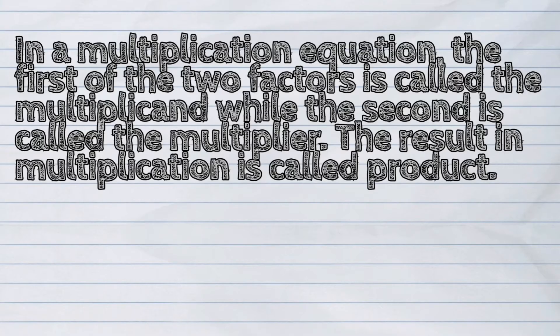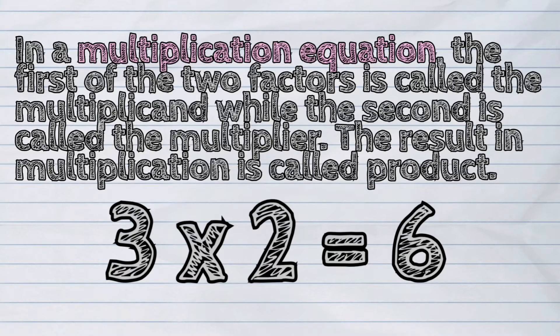In a multiplication equation, the first of the two factors is called the multiplicand, while the second is called the multiplier. The result in multiplication is called product.